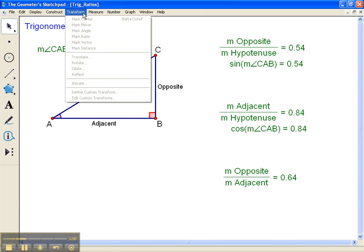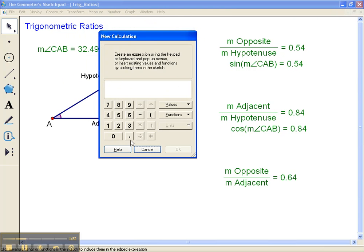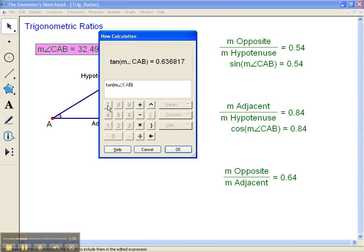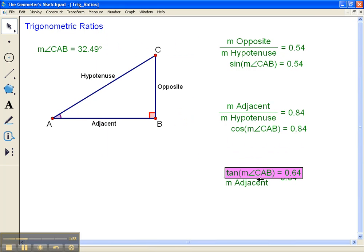One last one. You can probably guess which one is going to be tangent of my angle measurement and it's the same thing as opposite over adjacent.